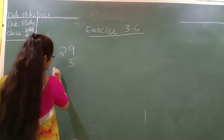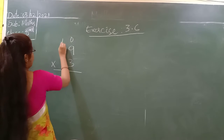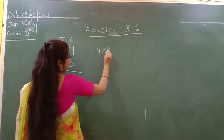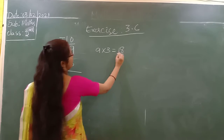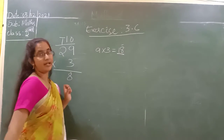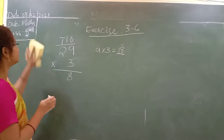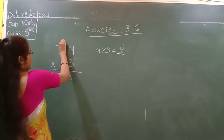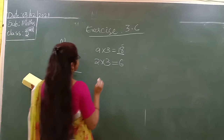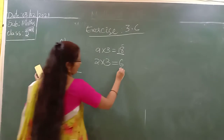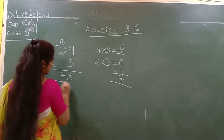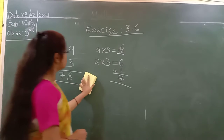29 into 3. First we go with the 1's space, then the 10's space. Multiply in the 1's space: 9 into 3 is 27. We got 2 numbers — write 7 in the 1's place, and 2 is the carry. Next multiply: 2 into 3 is 6, plus carry 1 is 7. Wait — 9 into 3 is 18; write 8, carry 1. Then 2 into 3 is 6, plus 1 carry is 7. The answer is 78.